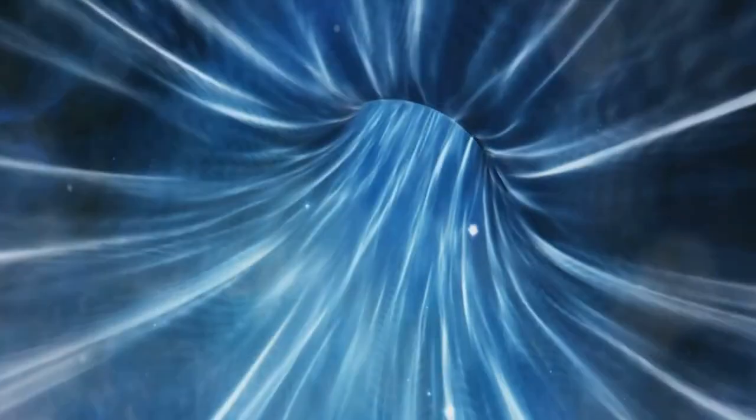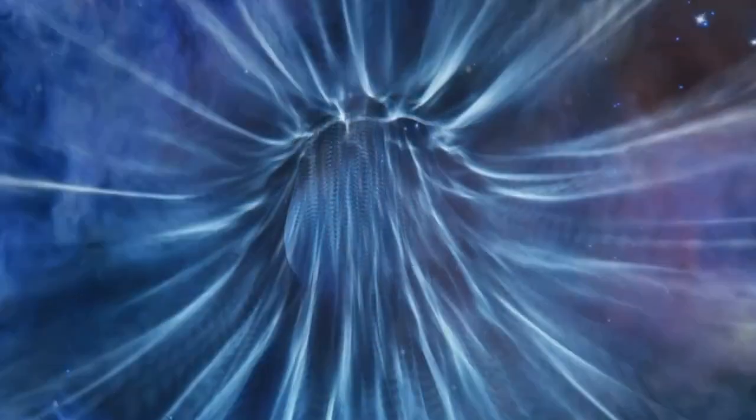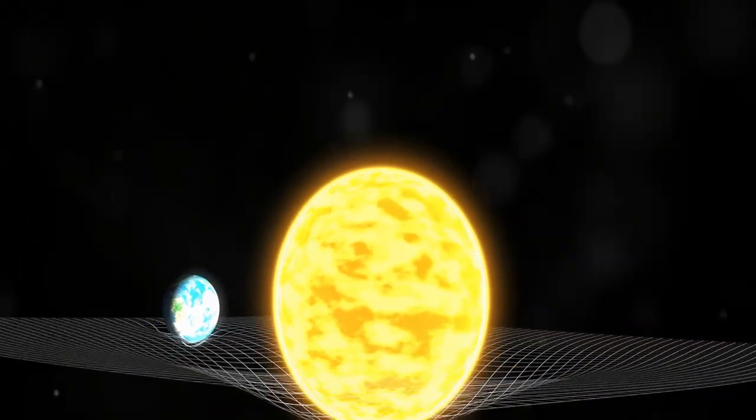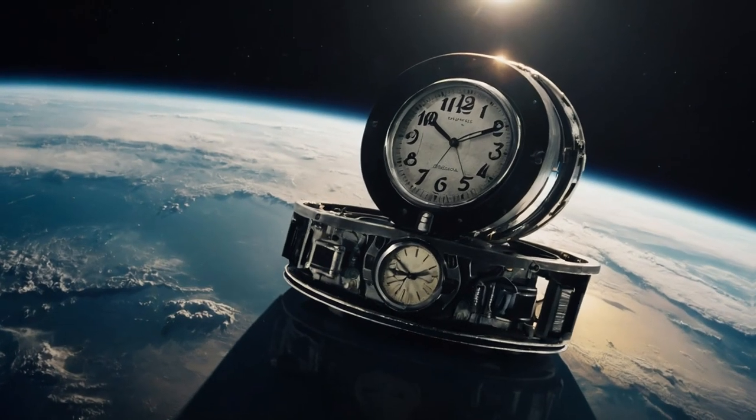In their interpretation, Einstein and Rosen predicted the existence of bridges, or wormholes, through space-time. Imagine folding a paper in half and poking a hole through the two ends. The hole represents a wormhole, a shortcut through space-time.